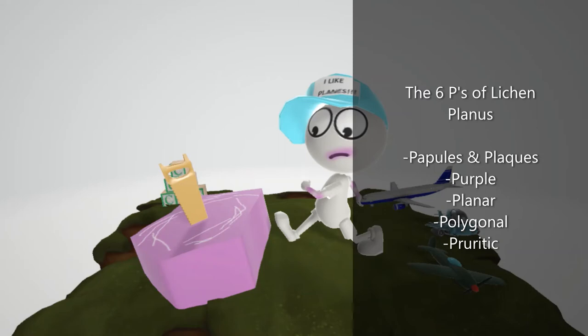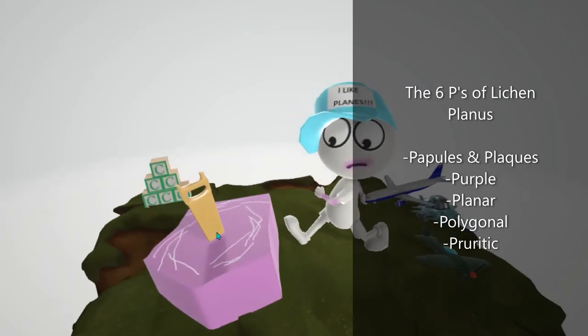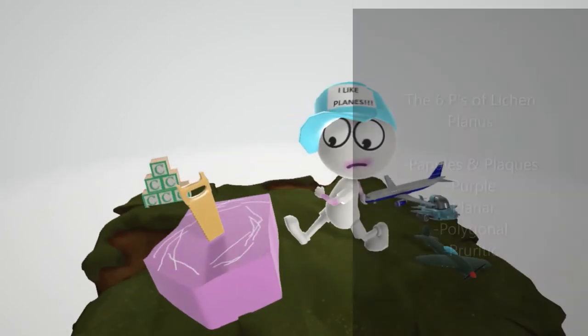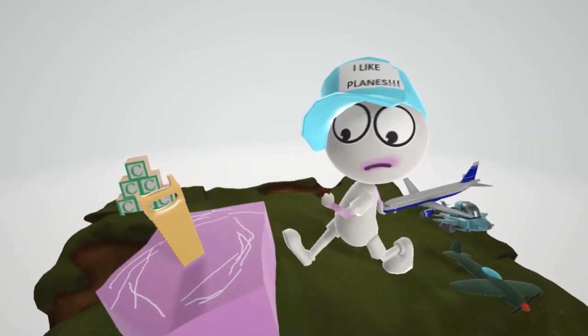Finally, the sixth P is that they're pruritic, they're very itchy, and you see the scratch marks on this polygon over here. Let's remember the pruritus. These scratch marks, these white marks over here, are also going to help us remember another thing.